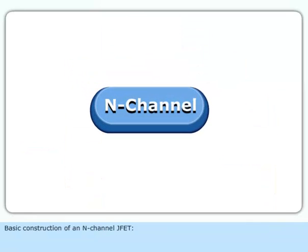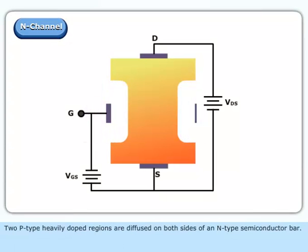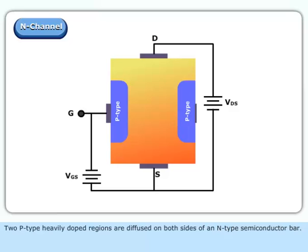Basic Construction of an N-channel JFET. Two P-type heavily doped regions are diffused on both sides of an N-type semiconductor bar.